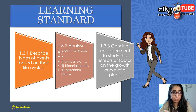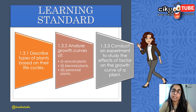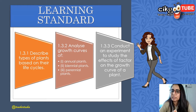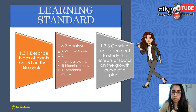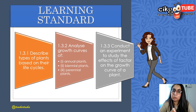The first learning standard is to describe types of plants — we have annual, biennial, and perennial plants — based on their life cycles. The second is to analyze the growth curves of annual, biennial, and perennial plants. We learned growth curves in Form 4 Chapter 15 for humans and animals, but here we focus on plant growth. The third is to conduct an experiment on factors affecting a plant's growth curve, but we'll skip 1.3.3 and focus on 1.3.1 and 1.3.2.